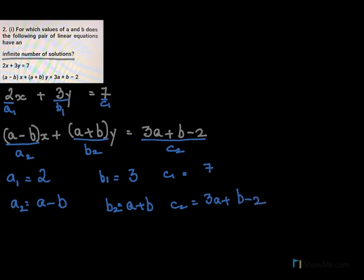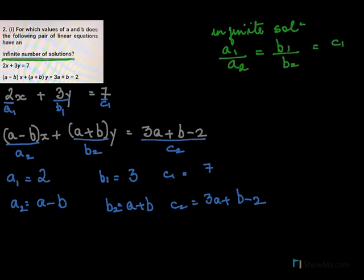Now we'll go to the next step. It says it has infinite solutions. So if these two equations have infinite solution, what is the condition? That means A1 over A2 must be equal to B1 over B2 equal to C1 over C2.